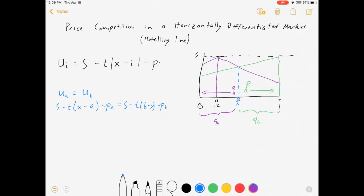All right, now we've got all this. The S's are going to cancel out, so is a bunch of other stuff. And we're going to find that when we solve for X, we get, X is equal to A plus B plus price of good B minus price of good A over 2T.